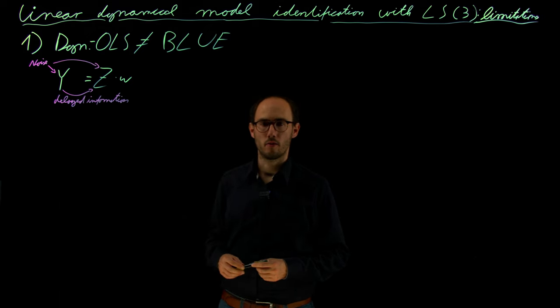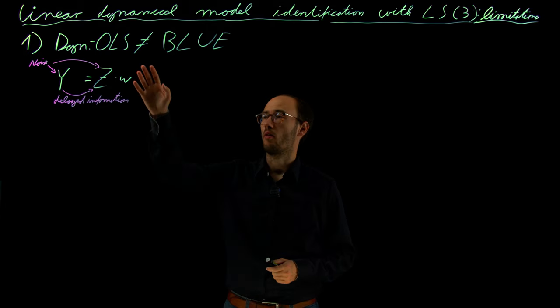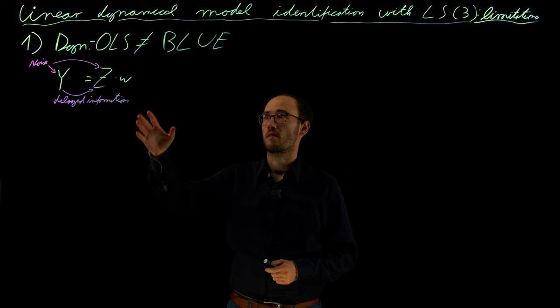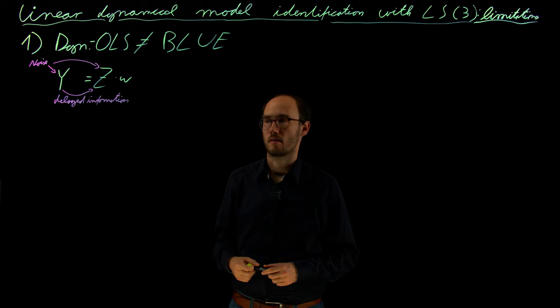In the previous video, we have already seen one major limitation. If we apply ordinary least squares to a dynamical system, we basically lose our BLUE properties of the best linear unbiased estimator.